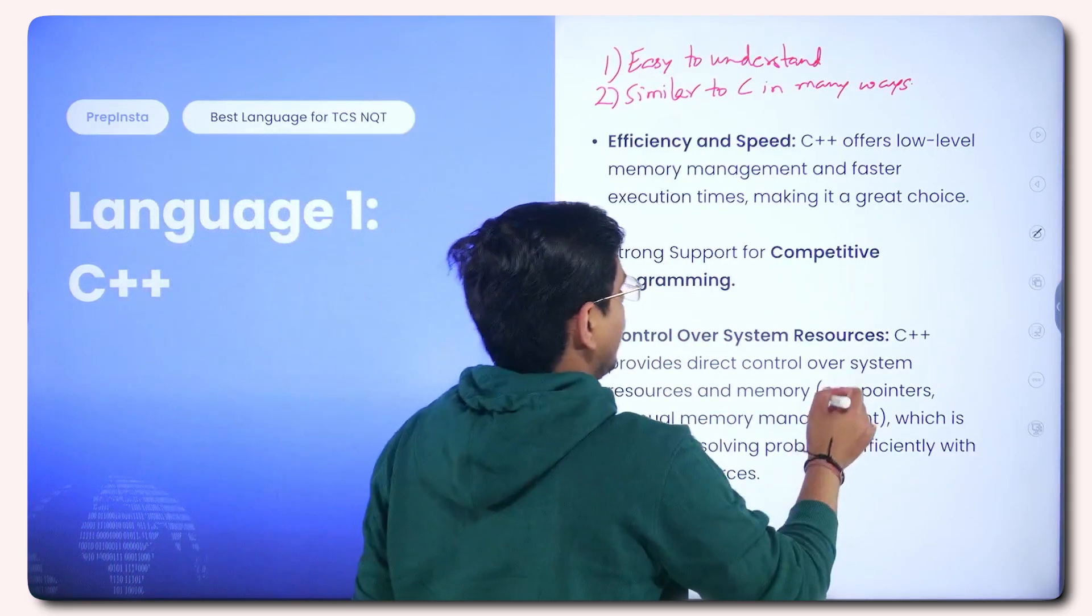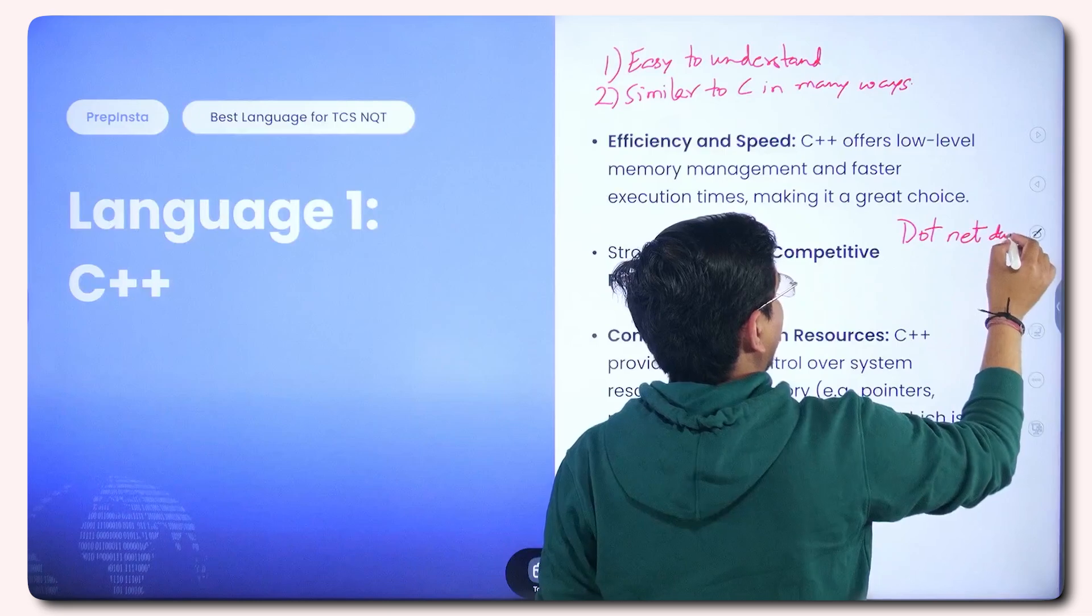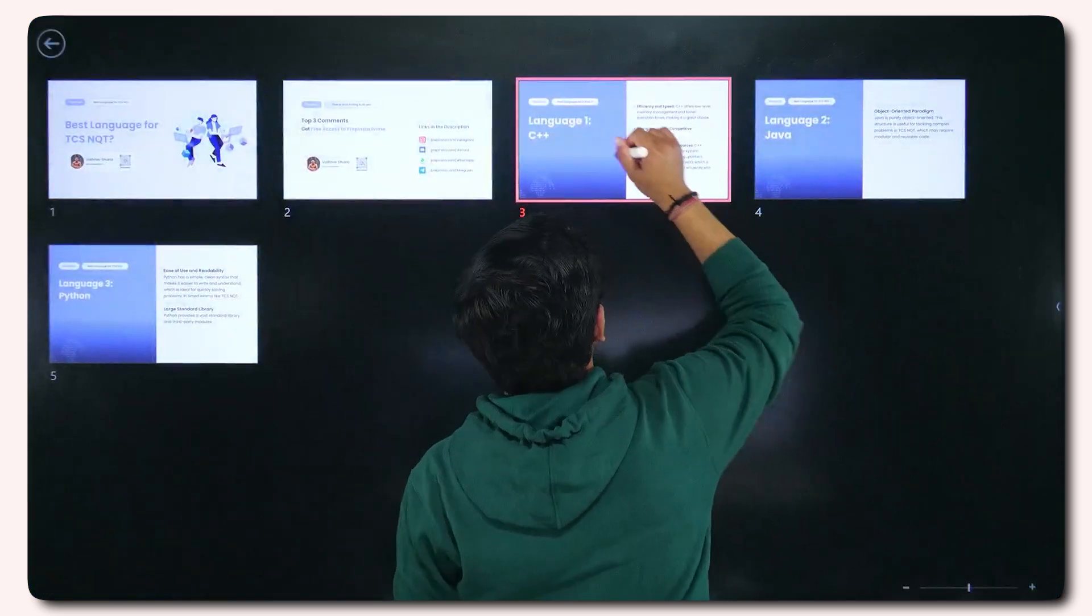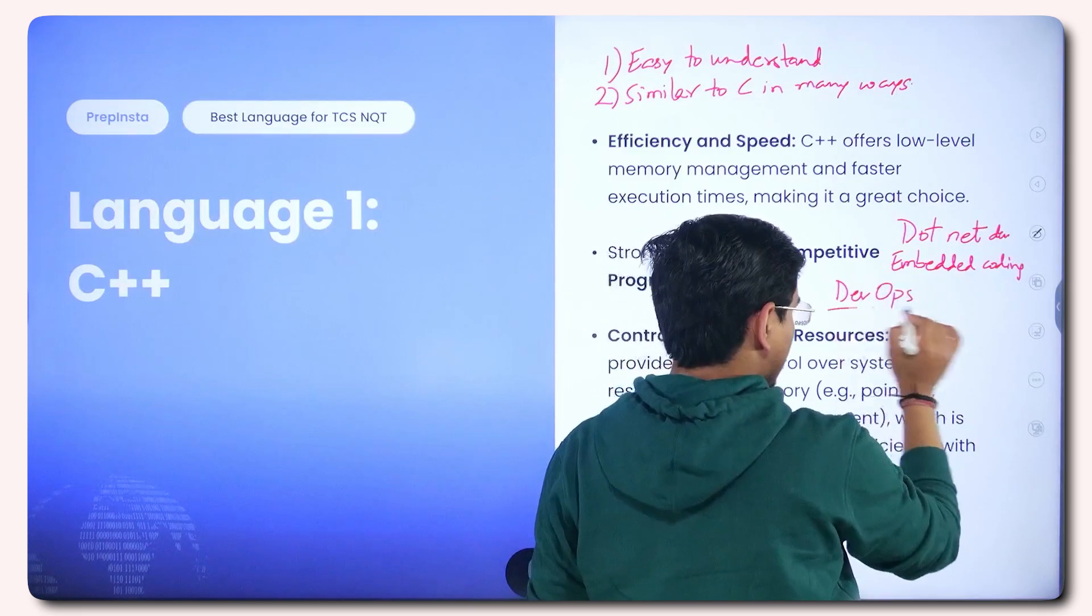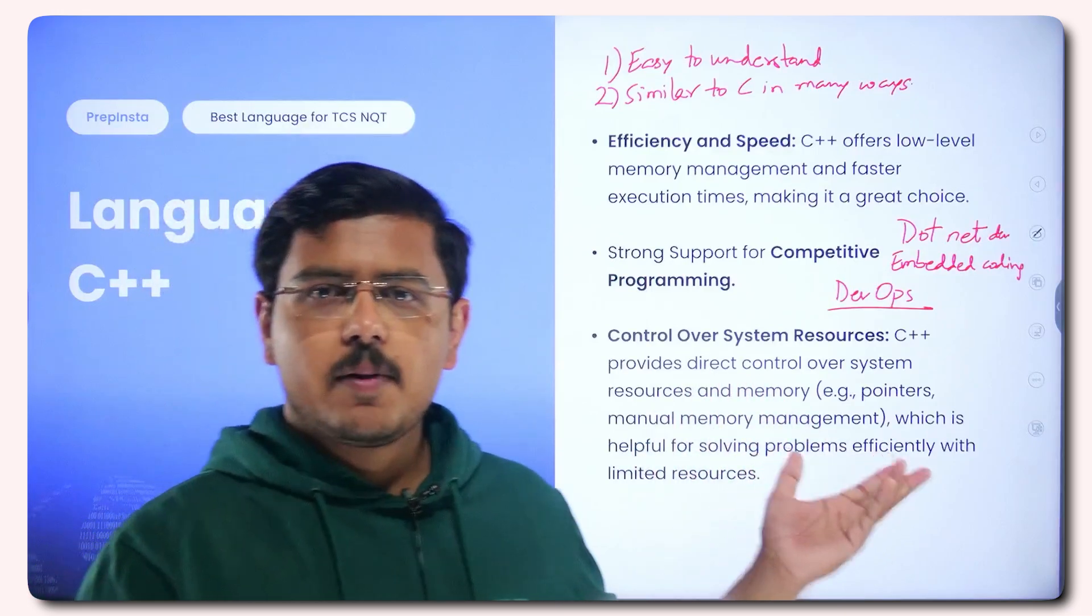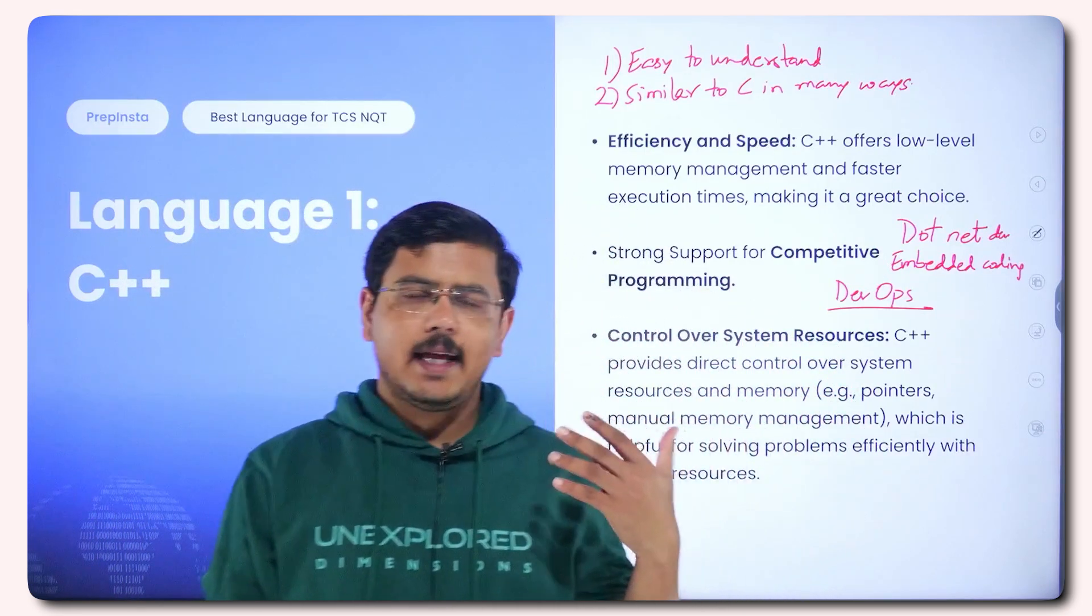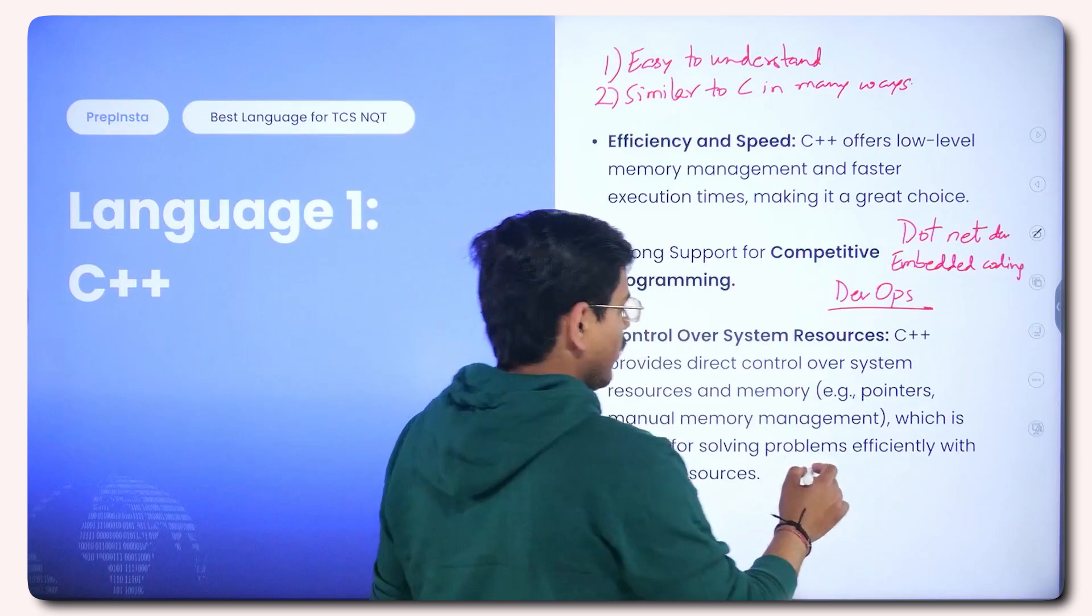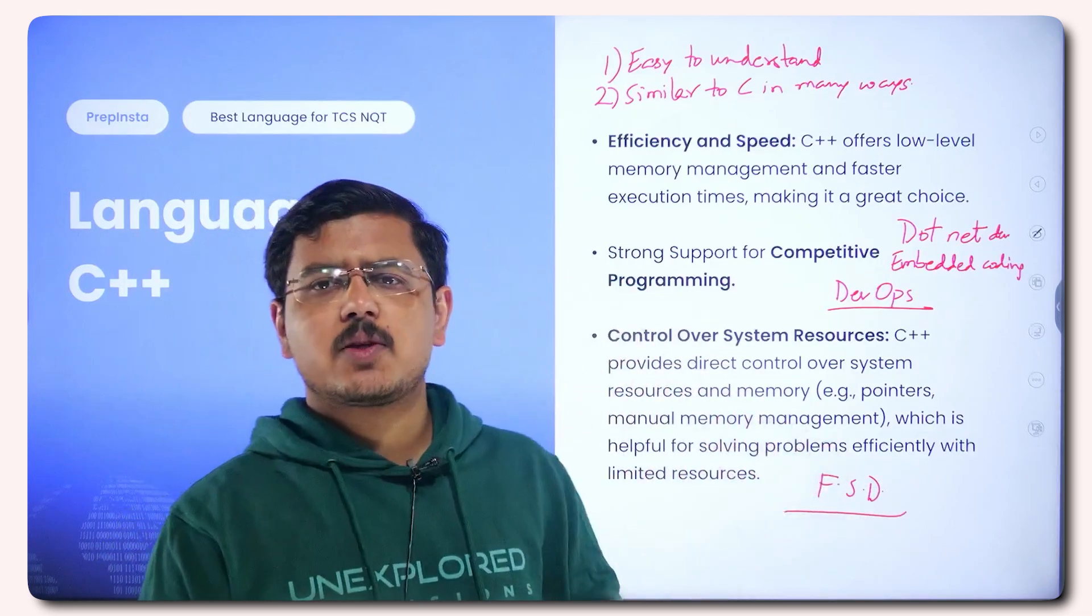Now for anybody who is targeting the roles of .NET developer and embedded coding developer, if you are targeting these fields along with something like DevOps. However, DevOps is language independent but people who are working in C++ generally they are quite comfortable in their DevOps domain as well. So if you are somebody who is targeting for these or if you are a full stack developer enthusiast, still for data structures and algorithm solving, you need a language and C++ is usually very efficient.